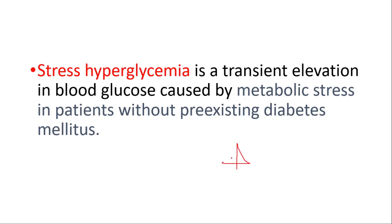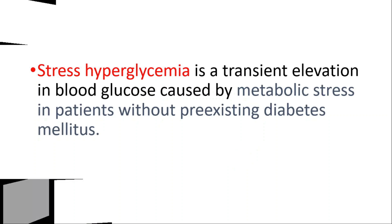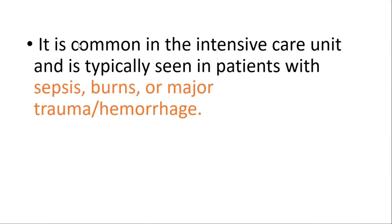In this video we're going to talk about how metabolic stress can cause high blood glucose levels. Stress hyperglycemia is a transient elevation in blood glucose caused by metabolic stress in patients without pre-existing diabetes mellitus. It's common in the intensive care unit and is typically seen in patients with sepsis, burns, major trauma, or hemorrhage.